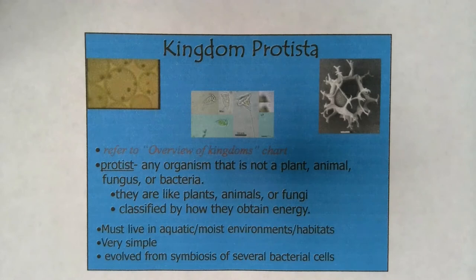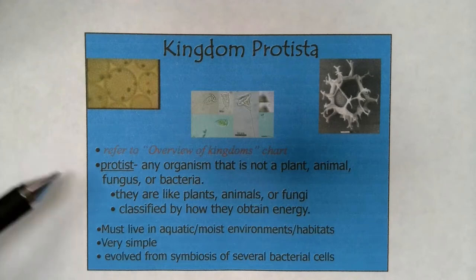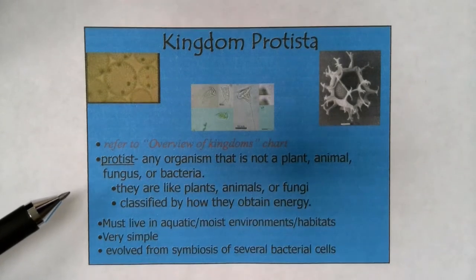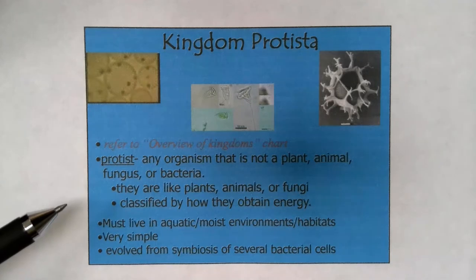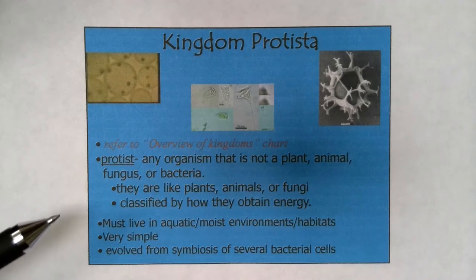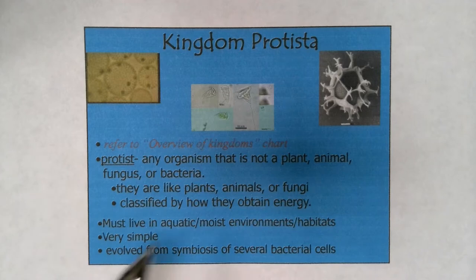Make sure you refer back to that chart. By definition, protists are a group of organisms that a lot of people don't really know a ton about. The definition says it's any organism that's not a plant, not an animal, not fungus, and not bacteria. So basically, any organism that can't be classified into one of those groups — and there are two bacterial kingdoms — is going to be considered a protist.